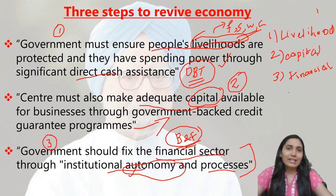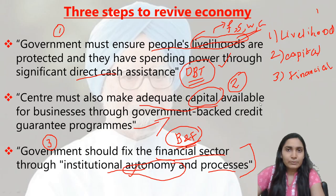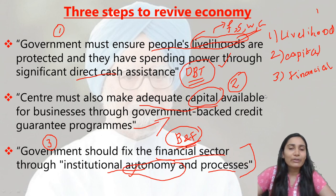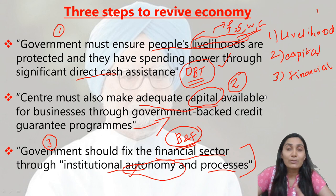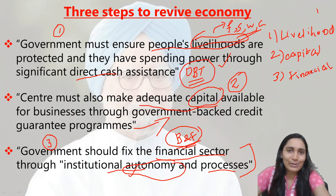So these are the three steps suggested by Manmohan Singh: first, protecting livelihoods through direct cash assistance; second, providing adequate capital to businesses via credit guarantees; third, fixing the financial sector by granting institutional autonomy. If you like the video, please share it with your friends, like, subscribe to the channel, and press the bell icon. Thank you so much for watching.